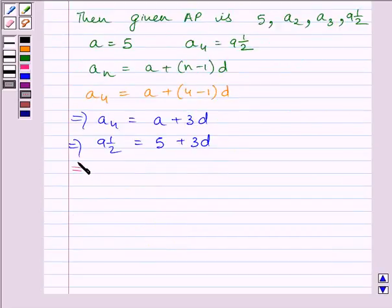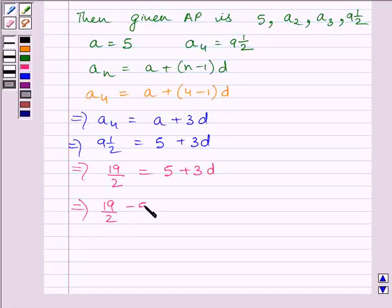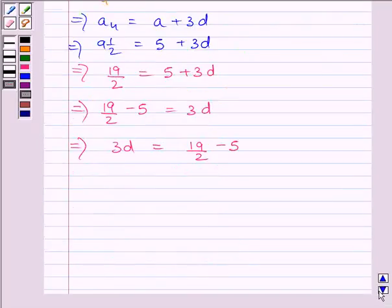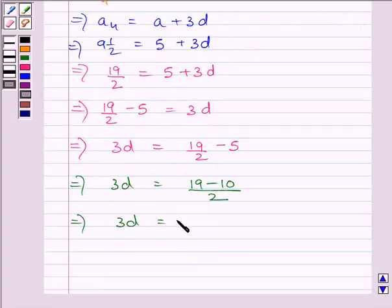This implies 19/2 = 5 + 3d. Rearranging, 19/2 - 5 = 3d. This gives us 3d = (19-10)/2, so 3d = 9/2.